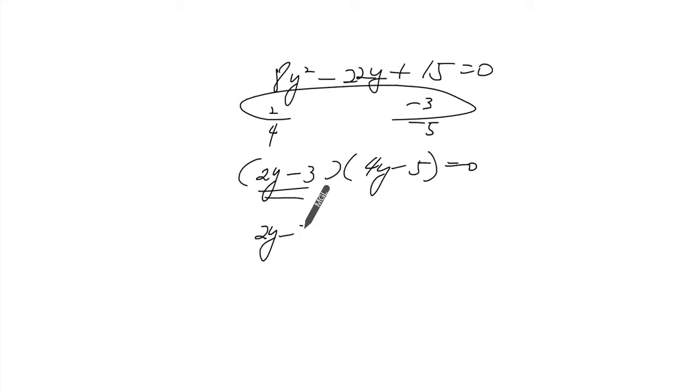So when 2y minus 3 is equal to 0 and 4y minus 5 is equal to 0, the whole expression will multiply to give you 0. So from here, we get 2y is equal to 3 and y is equal to 3 over 2. 4y is equal to 5 and y is equal to 5 over 4.